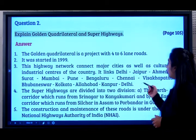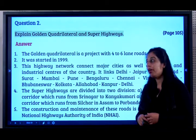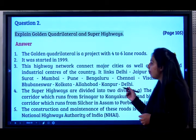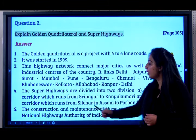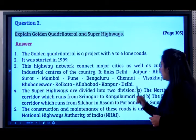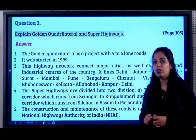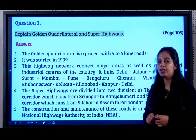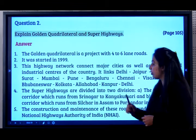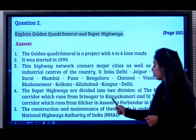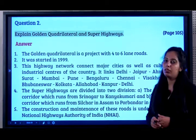...Pune, Bengaluru, Chennai, Vishakhapatnam, Bhubaneswar, Kolkata, Allahabad, Kanpur, and Delhi. The superhighways are divided into two corridors: the north-south corridor running from Srinagar to Kanyakumari, and the east-west corridor running from Silchar in Assam to Porbandar in Gujarat. The construction and maintenance of these roads is under the control of the National Highway Authority of India.